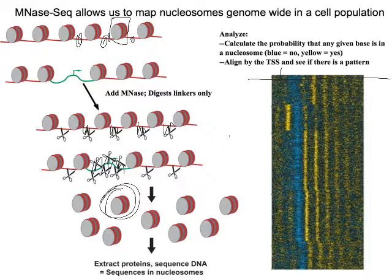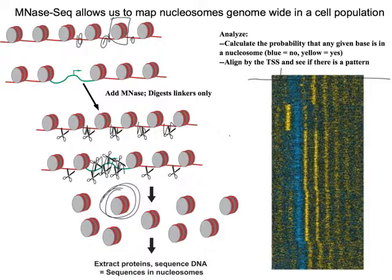If the probability that it was in a nucleosome is low, we'll make it blue, and if the probability is high, we'll make it yellow. We line all these up by where the transcription start site for each gene is — we've got 6,000 rows in this diagram — and we let the computer sort this out by the patterns.